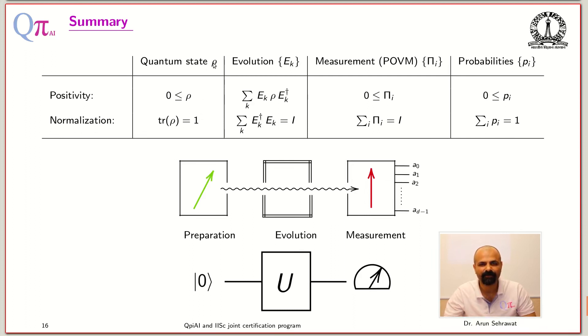For preparation you have ρ, which is a mathematical representation of your preparation procedure. ρ must be a positive operator because all these probabilities are positive numbers whatever measurement you perform, and trace of ρ must be one because these probabilities sum and give you one.